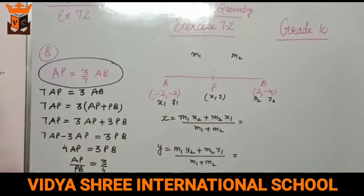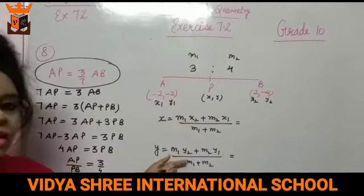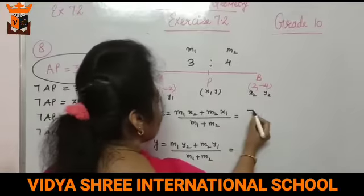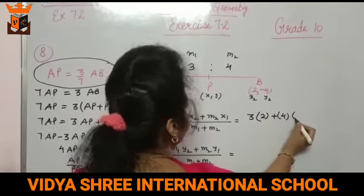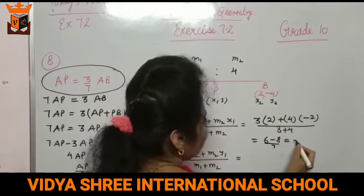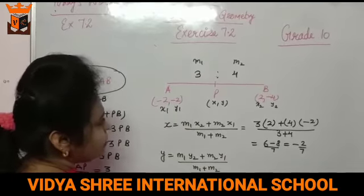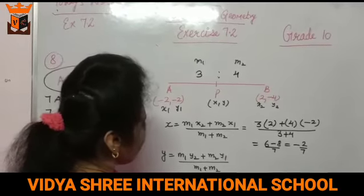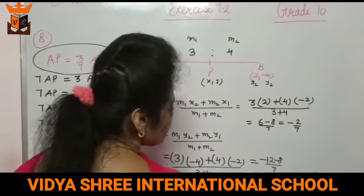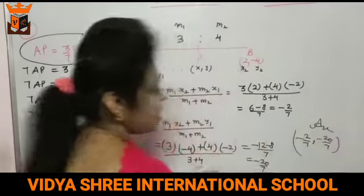AP and PB ka ratio humne nikal liya — that is 3:4. Ab P point nikalna bilkul easy hai. X ka formula: M1·x2 plus M2·x1 upon M1 plus M2. M1 aapke paas hai 3, x2 hai 2, M2 hai 4, x1 hai minus 2. Niche M1 plus M2 = 7. This is 6 minus 8 by 7, answer aagaya minus 2 by 7. Ab y: M1 = 3, y2 = minus 4, M2 = 4, y1 = minus 2. Niche 3 plus 4 = 7. So minus 12 minus 8 by 7 = minus 20 by 7. Toh point aagaya (-2/7, -20/7). And this is the answer.